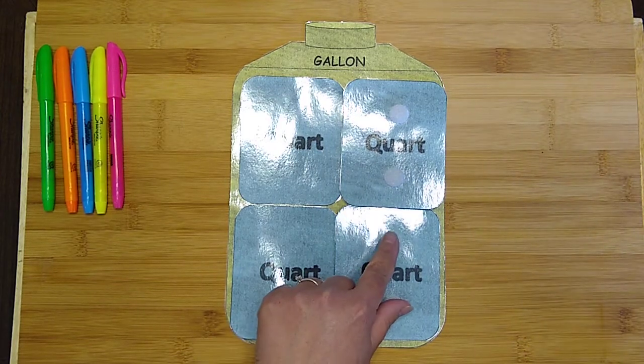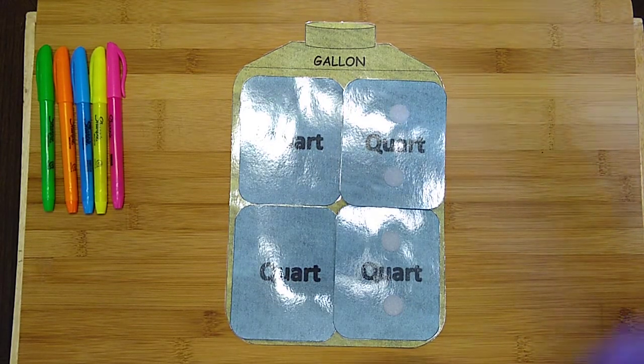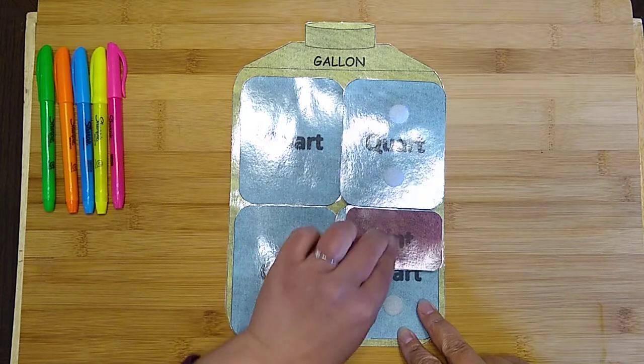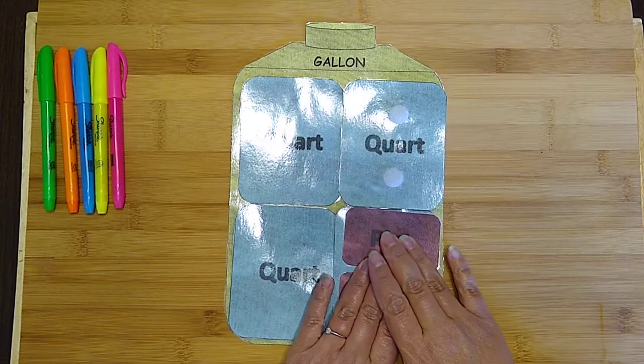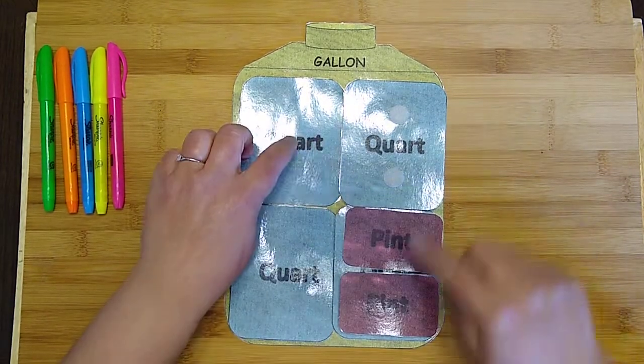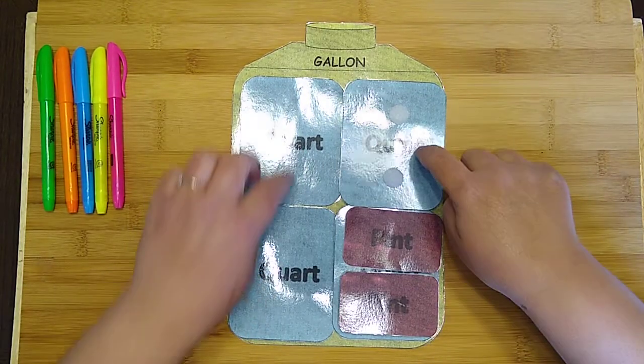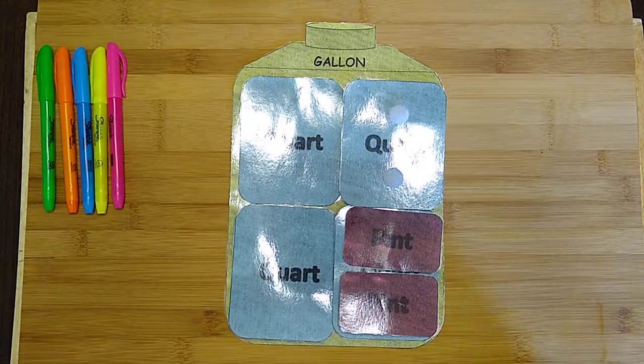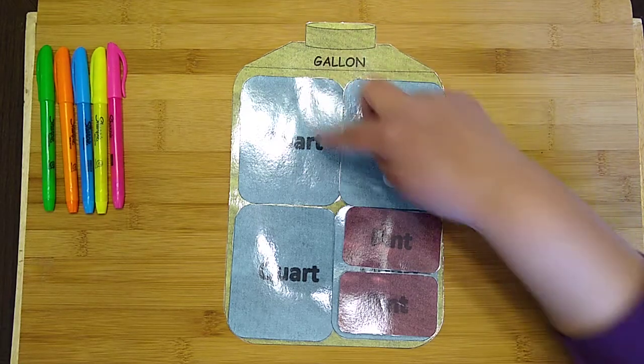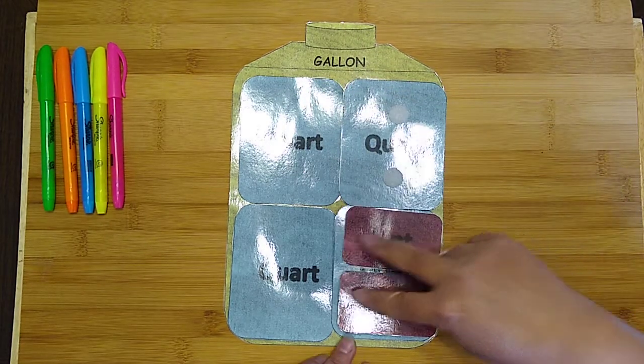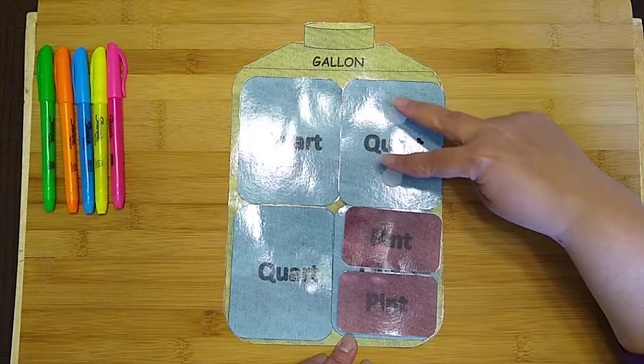Okay, and then within one quart we have two pints. Okay, so if I had four quarts in one gallon, how many pints do you think I have in one gallon? I'd have two, four, six, eight.